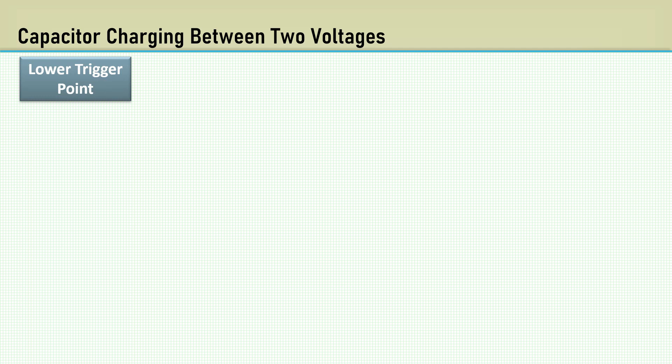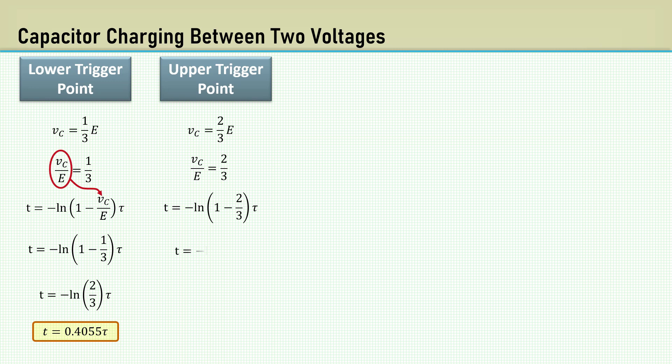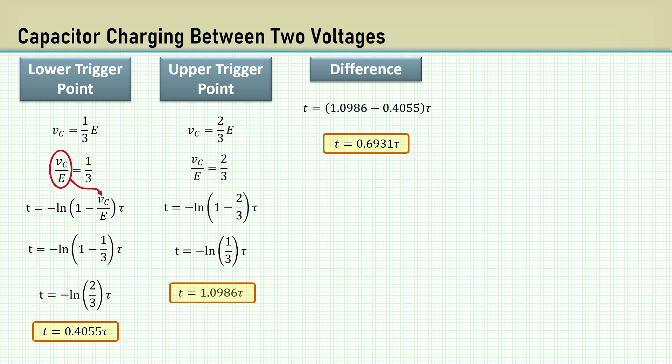The lower trigger point is where the capacitor voltage equals 1/3 of the supply E. We rearrange that in terms of VC over E. We can pop that into our formula for time here. Solving for time, we get 0.4055 time constants. This is the start time. The upper trigger point, as we said, is when the capacitor voltage is 2/3 of the supply E. This comes out to a time of 1.0986 time constants. Taking the difference between the two gives us that 0.693 number we are looking for. I only show it to 4 decimal places.